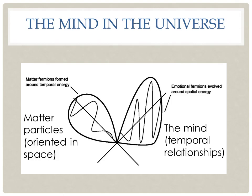In summary, the mind and matter are symmetric systems, but we have to take into account their major differences: matter is oriented in space and the mind is oriented in time.